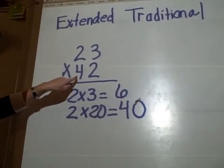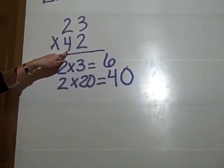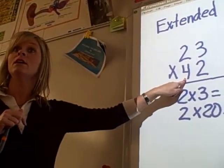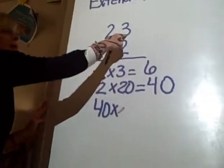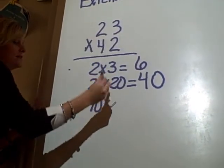Linda, what does this 4 really mean? 40. 40, and why? It's in the 10th place. Because it's in the 10th place, and 4 10ths means? 40. 40, so I'm going to multiply 40 by this 3. Does this 3 really mean 3? Yes. Yes, it does.